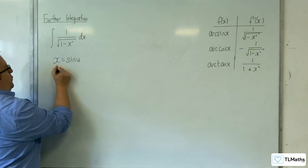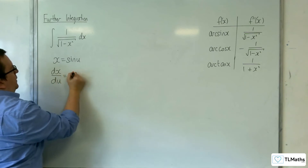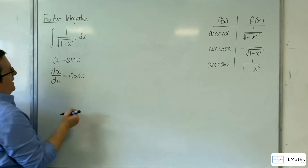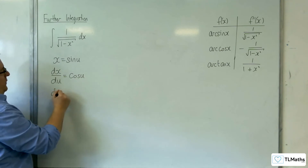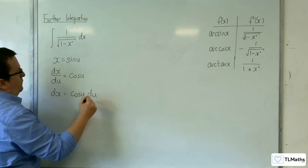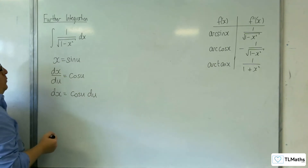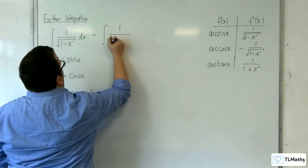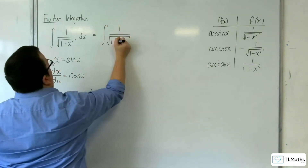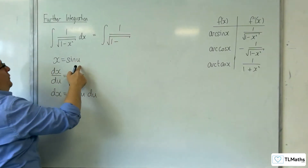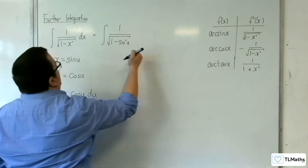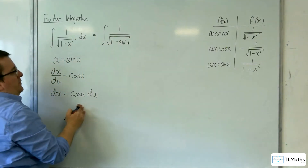First of all, you differentiate your substitution. dx by du is cosine of u. So rearrange that to get dx: dx is equal to cosine of u du. We've got the replacement for dx and the replacement for x. So this is equal to the integral of 1 over the square root of 1 minus sine squared u, and the dx has been replaced with cosine of u du.